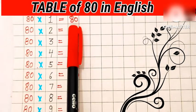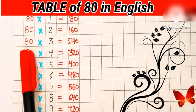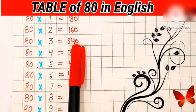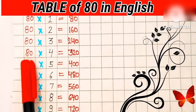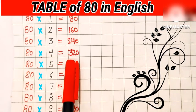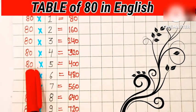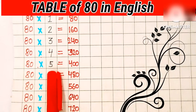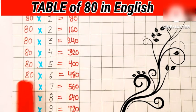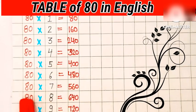81's are 80. 82's are 160. 83's are 240. 84's are 320. 85's are 400. 86's are 480.